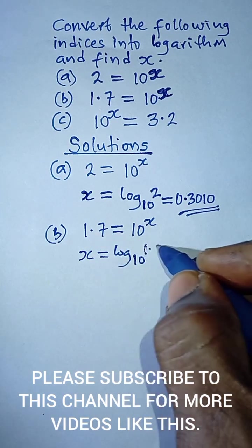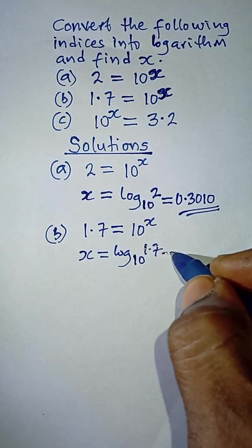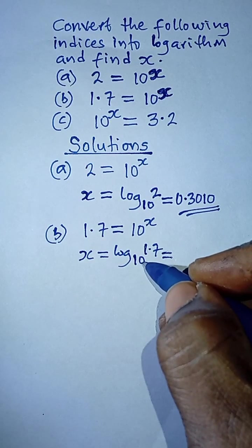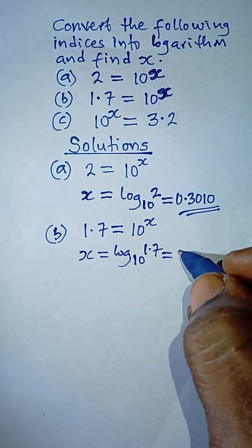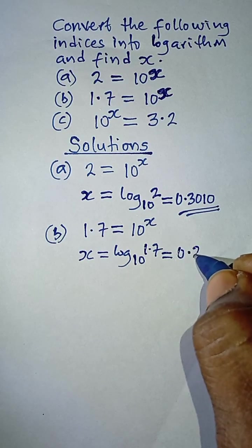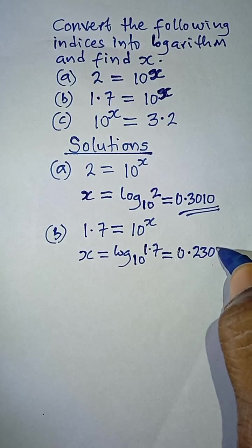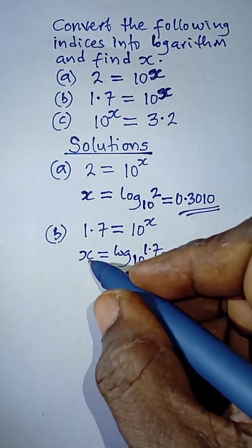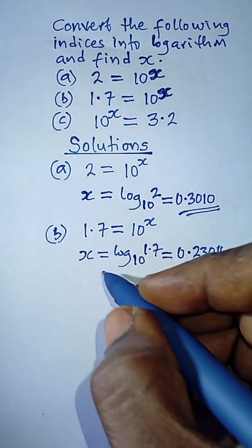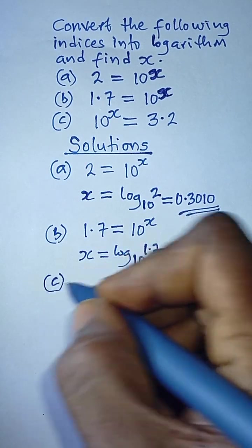The logarithm of 1.7, if we simply press our calculator, we're going to get log 1.7 as 0.2304. So that means our x here is 0.2304.